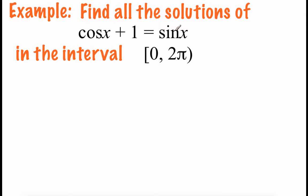Here in our first example, we've got the cosine of x plus 1 equals the sine of x, and we're going to find all the solutions between 0 and 2 pi. Since we're given that interval from 0 to 2 pi, at the end we won't have to add on those extra rotations. Right now we've got cosines and sines, and normally we would look for an identity to try to switch one of these into the other one, but I don't see any identities we could use to turn this cosine into a sine or this sine into a cosine.